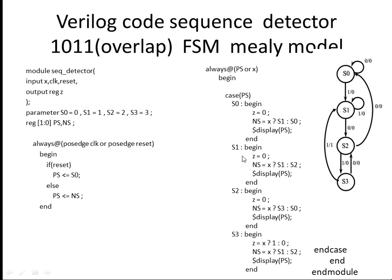Next, S1. When you are in state S1: Z is 0. Next state: if X is 1, it remains in the same state S1; if X is 0, it goes to S2.